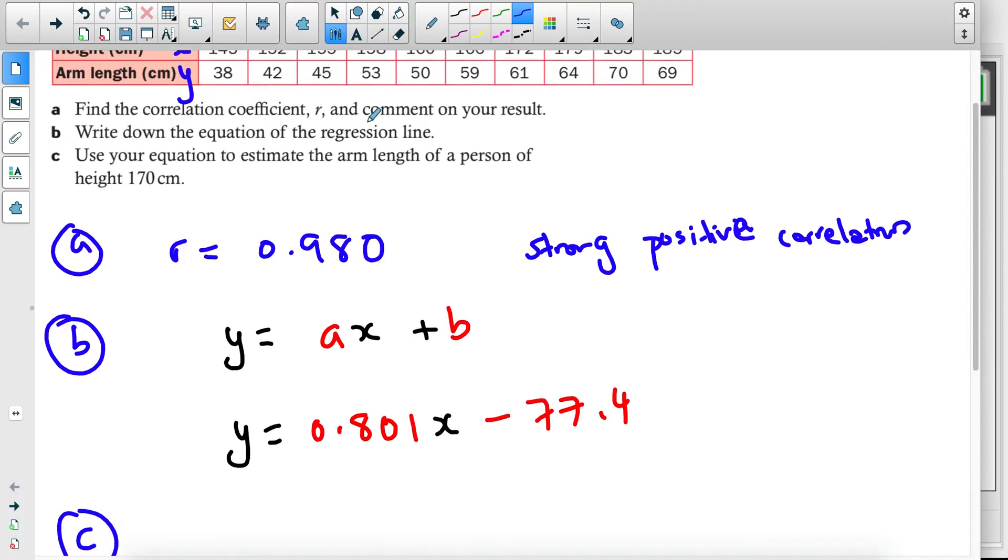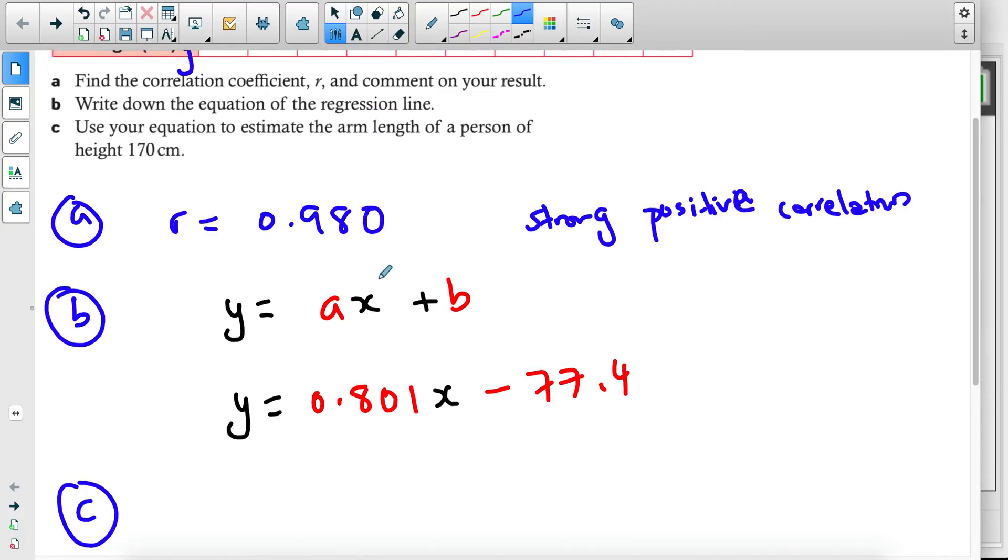So for part C, which is the last one, we need to use this, we need to use the equation to estimate the arm length of a person with a height of 170. Now, yes, it is an estimate because the value you're going to get is not an accurate value, it's an estimate. But it has to be the correct value based on the equation that you have.